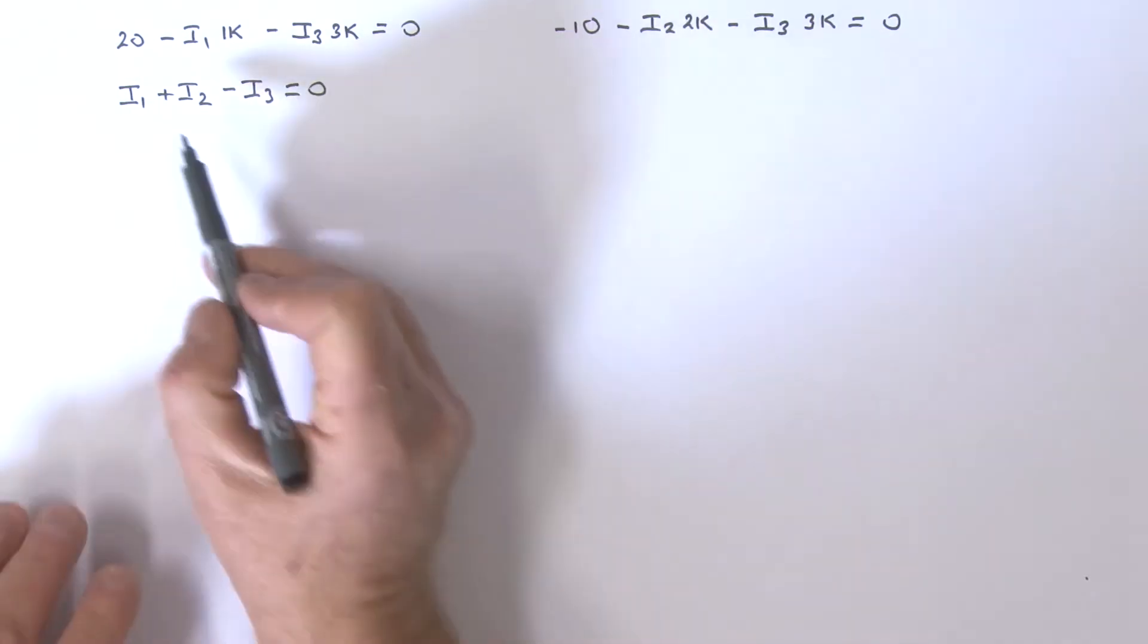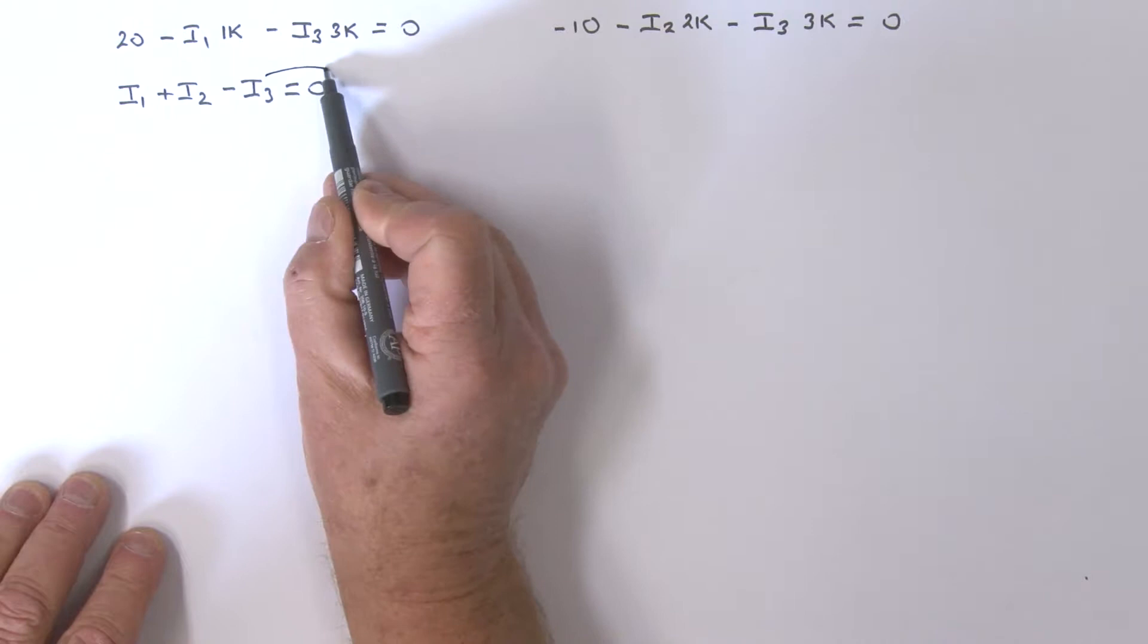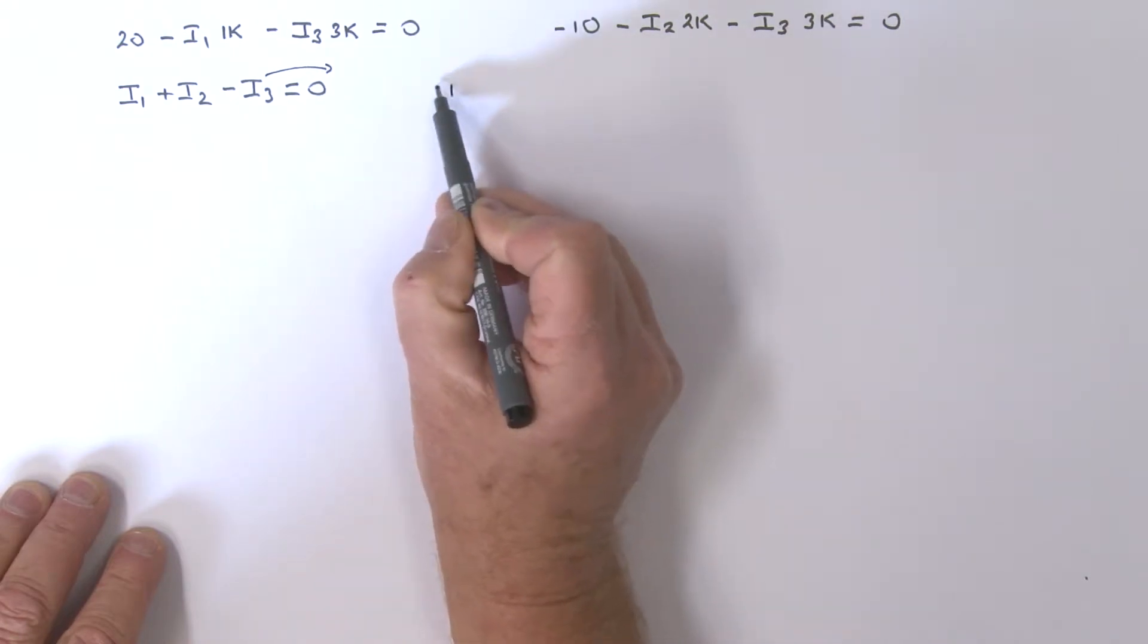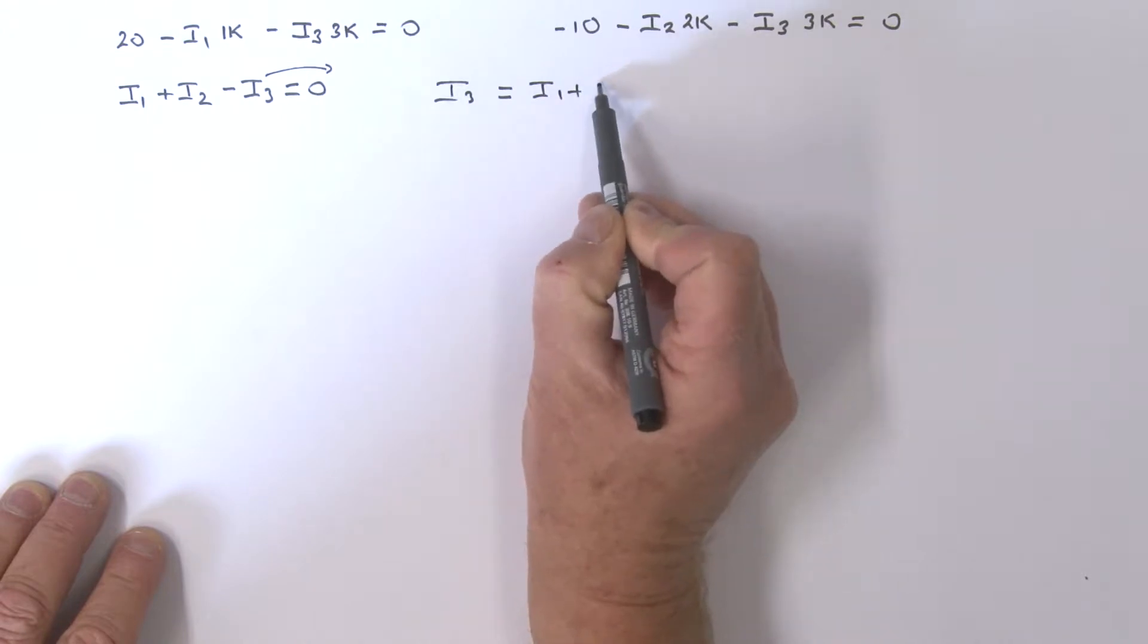Welcome back. From this equation, I can simply state that i3 is equal to i1 plus i2.